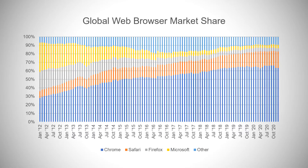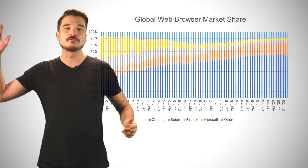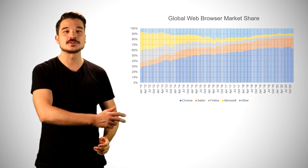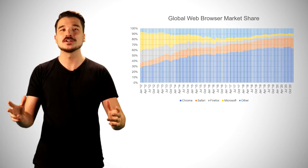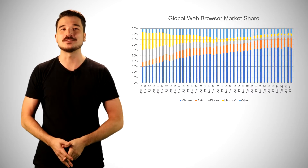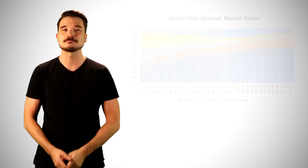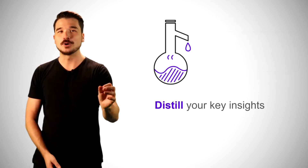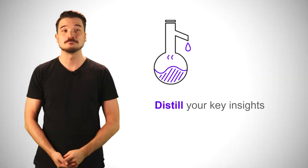Right now, we just have a data dump. I've just grabbed some data showing the worldwide market share of major web browsers. I've thrown it into Microsoft Excel and inserted a chart with Excel's default settings.